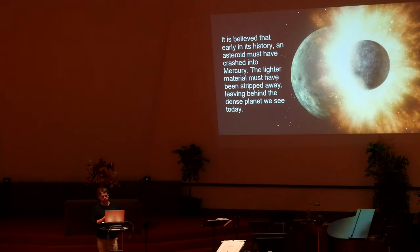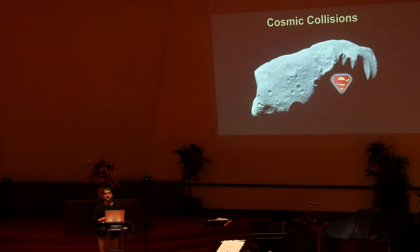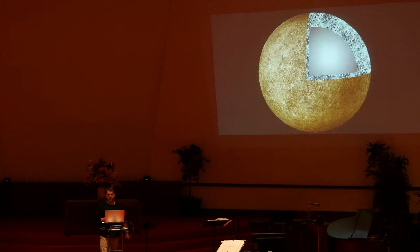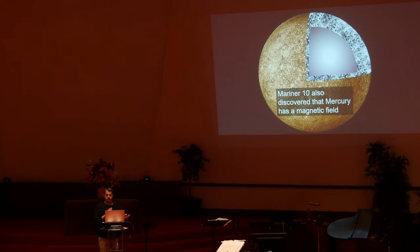Cosmic collisions are invoked to explain most of the unusual features of our solar system — so many, in fact, that we might consider them to have superpowers. Additionally, Mariner 10 discovered that Mercury has a magnetic field, which was a huge mystery for decades. If it's billions of years old, it can't have a magnetic field unless the core is molten, which would rejuvenate that magnetic field. But it's too small and too old to have a molten core.